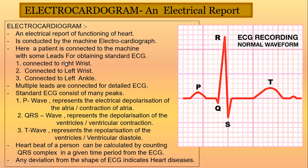The heart consists of cardiac muscles and is self-excitatory, or auto-excitatory. Electrical impulses are generated by the heart itself. The leads are connected externally — one to the right wrist, one to the left wrist, and one to the left ankle. These three leads record the heart's electrical activity from outside.